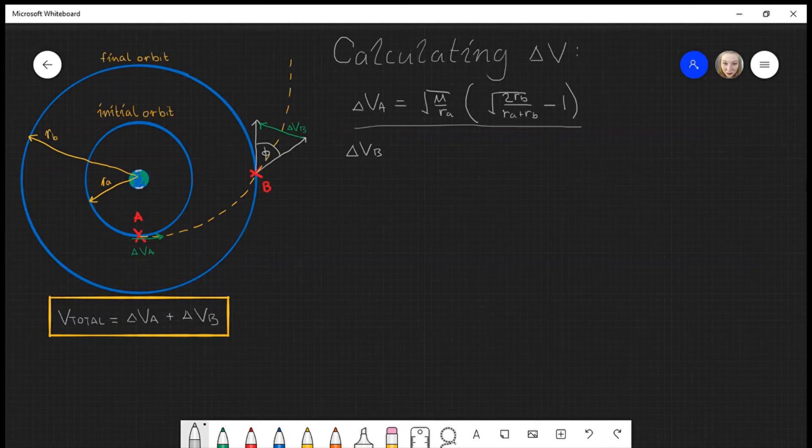I'm going to calculate the velocity of the final orbit at point B. So I'm going to label this V_F for final, B for at point B. Now this is just the velocity of a circle.